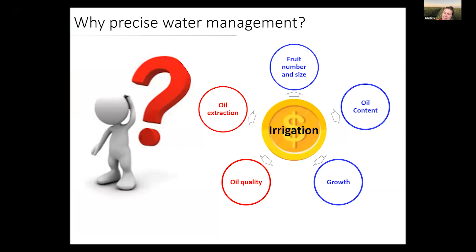Irrigation is an extremely important management practice in orchard systems because it's highly correlated to multiple productive parameters. It's essential for having good production, good yield, and good income. Doing good irrigation management can strongly impact yield and other parameters of system health. It affects mainly all the physiological and productive processes of a tree — fruit number, fruit size, growth of the vegetative part, oil content, oil extraction, and oil quality.